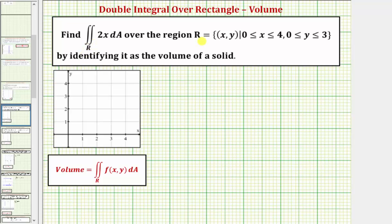We want to evaluate the double integral over the region R defined here by identifying it as the volume of a solid. Notice how the region of integration R is a rectangular region defined where x is over the closed interval from zero to four, and y is over the closed interval from zero to three.